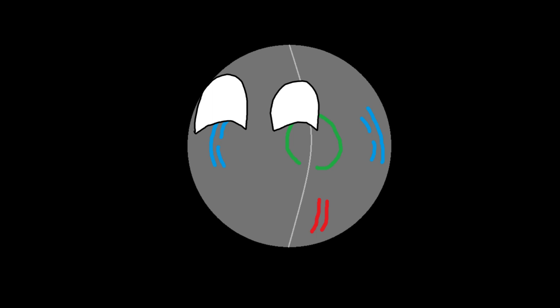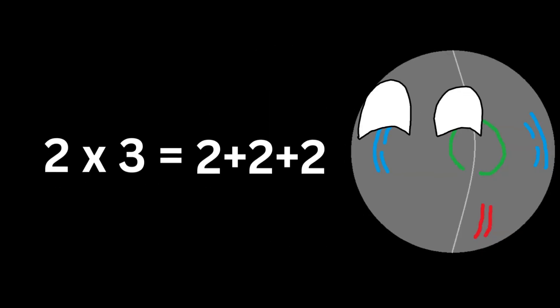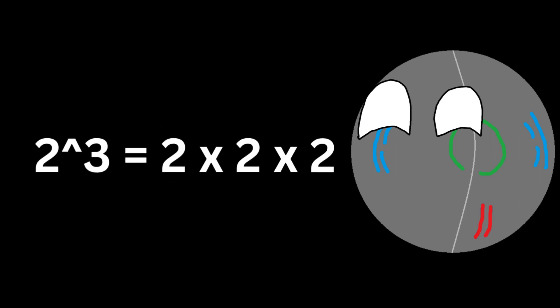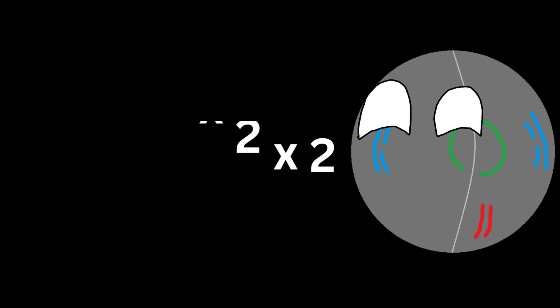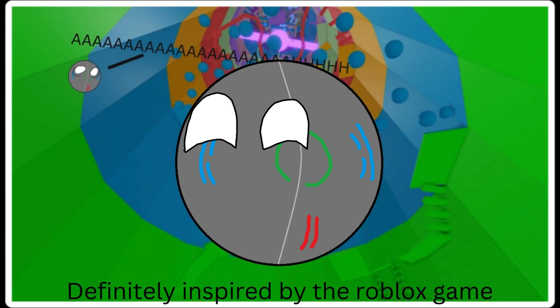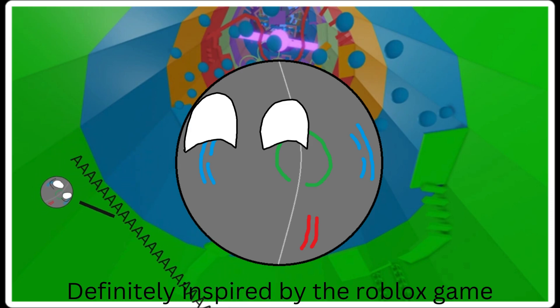Hello ladies and gentlemen. You know multiplication is repeated addition, and exponentiation is repeated multiplication — but have you ever questioned whether there is repeated exponentiation? Let me introduce the levels of hyperoperation, or what I like to call the tower of hell.